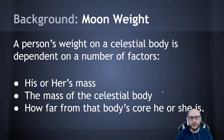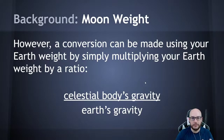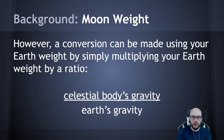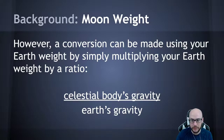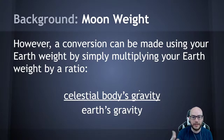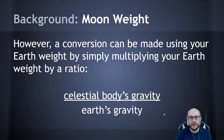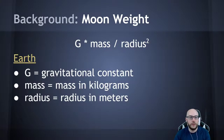A person's weight on a celestial body is dependent on a number of factors — their mass, the mass of the body, and so on. We can simplify this. I want to figure out what a person's weight would be on the moon. We can set up a ratio: the moon's acceleration due to gravity divided by earth's acceleration due to gravity. Then we just take your earth weight, multiply it by this ratio, and that's how much you would weigh on the moon.